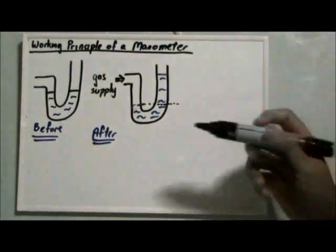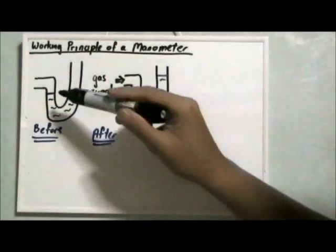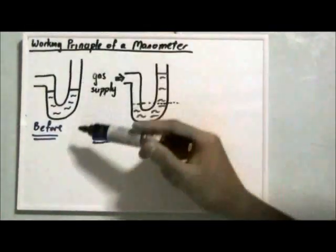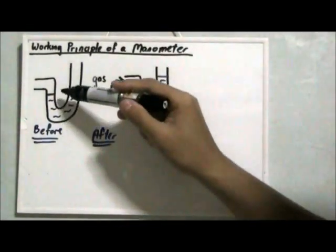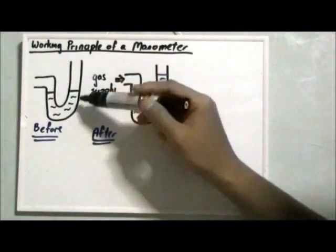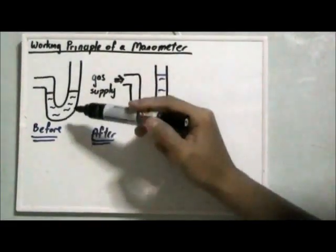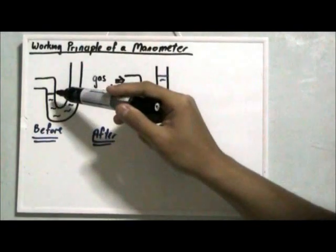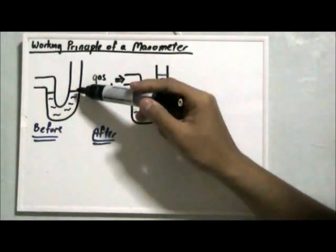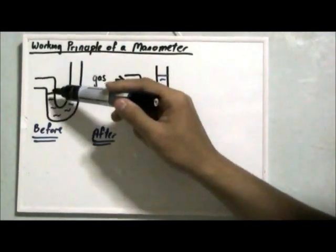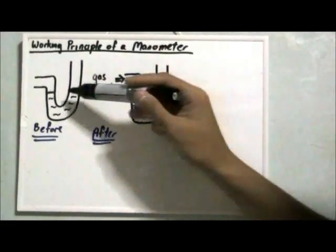A manometer is basically just a U-shaped tube filled with some liquid. At the beginning, it will look something like this with the liquid filled in the U-shaped tube, and the liquid level will be the same at the beginning.